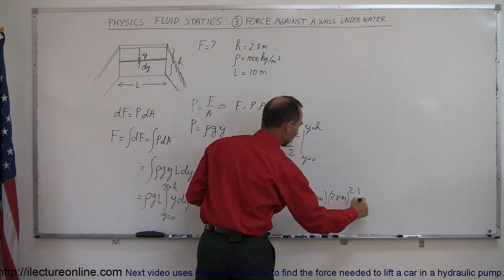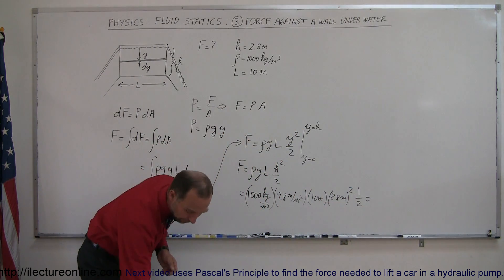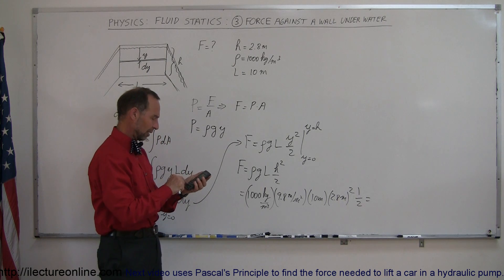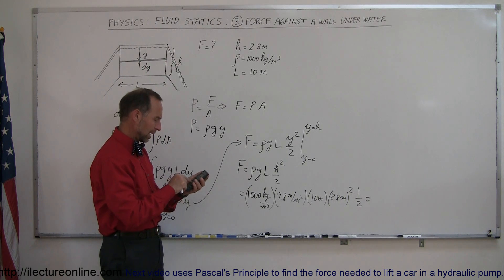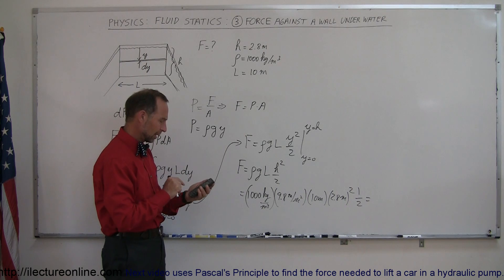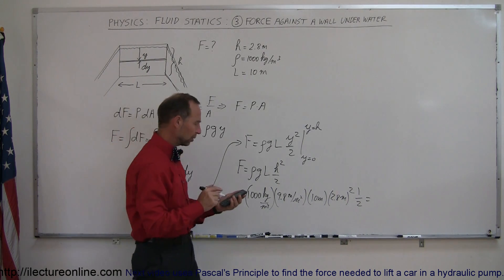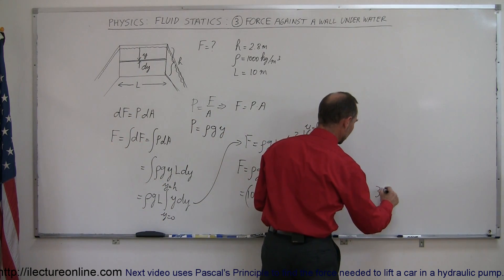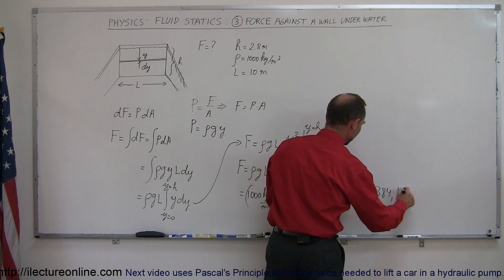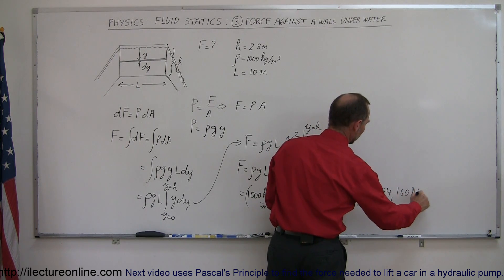We have to square that, and then we multiply the whole thing by 1 half. Let's see what we get when we grab a calculator and plug in those numbers. So we have 1,000 times 9.8 times 10 times 2.8 squared, and divide by 2, and we have a total force of 384,160 newtons.